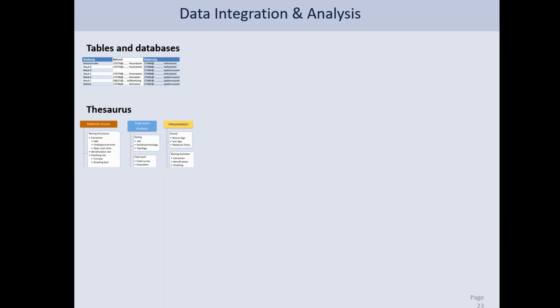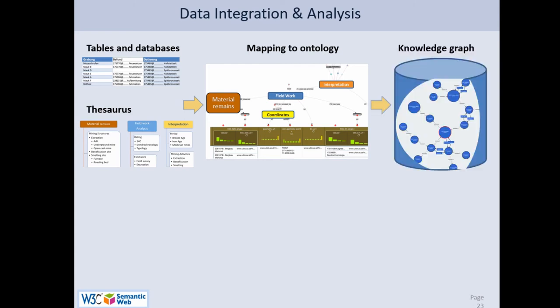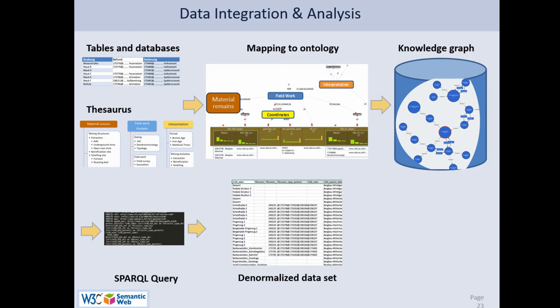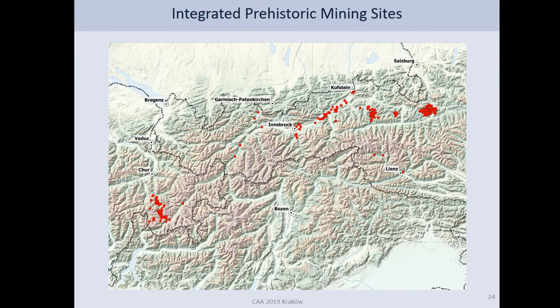This is the idea represented in the semantic workflow: we have the tables and databases with the thesauri, we make a mapping to the ontology using the KARMA mapping tool, put it into a knowledge graph in a triple store, and then make a SPARQL query to create a denormalized dataset and put it into GIS visualizations to explore the data, check if the data is good, identify any problems, and show some of the results. Of course there are different ways to access this knowledge graph and make use of it.